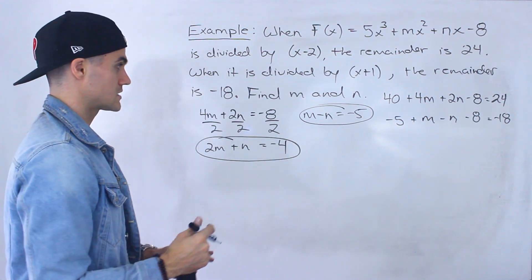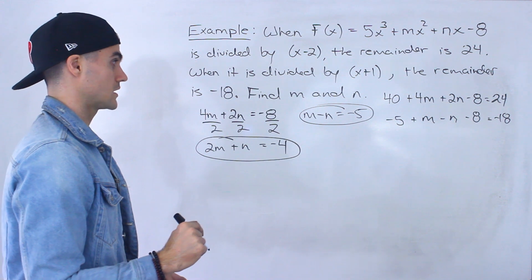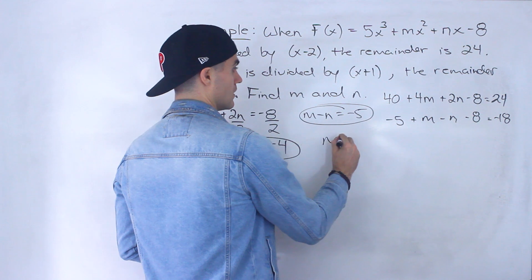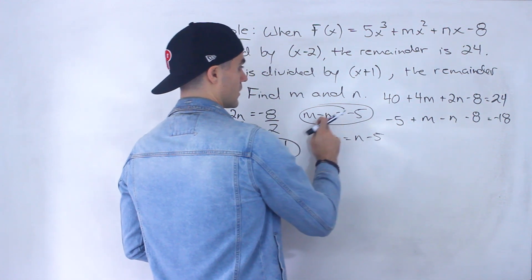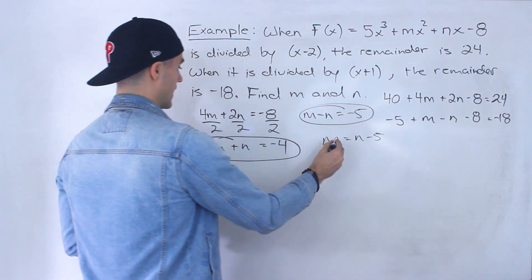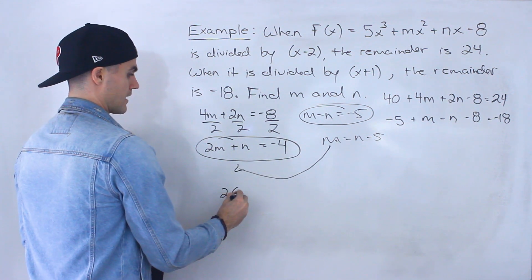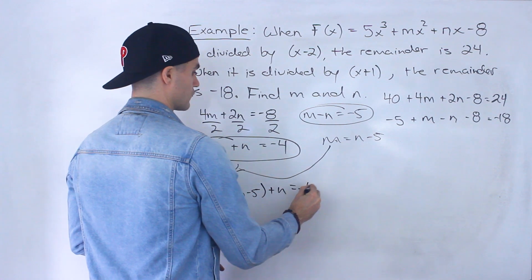And then from here, I mean, it's just substitution or elimination. So I'm going to isolate for the m here. Bring the negative n over and then I'm going to plug in that m here. So I'll have 2n - 5 + n equals negative 4.